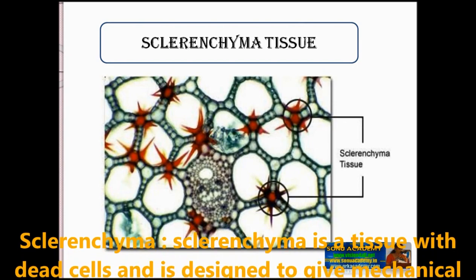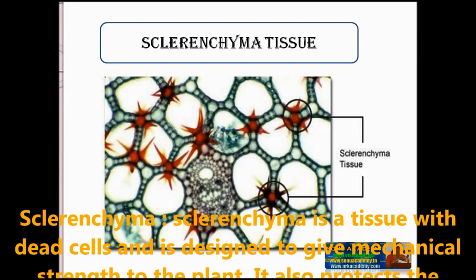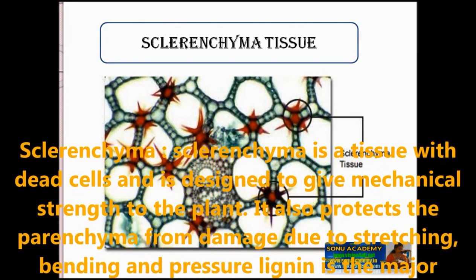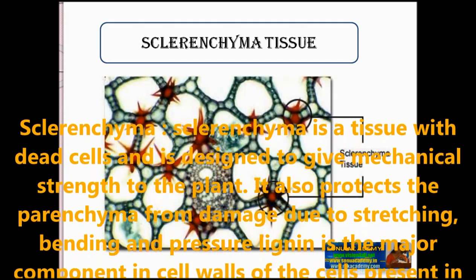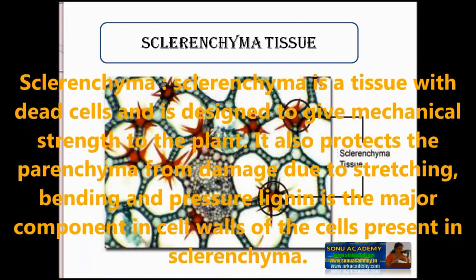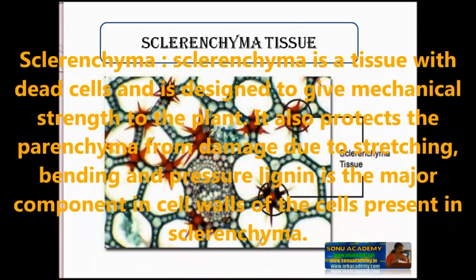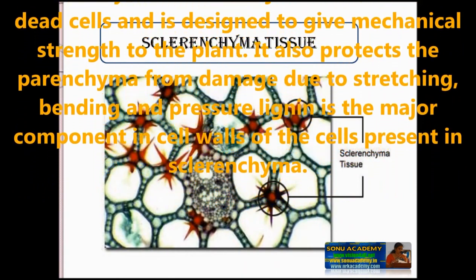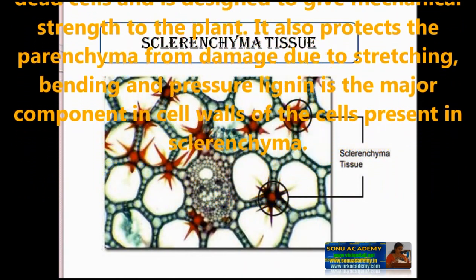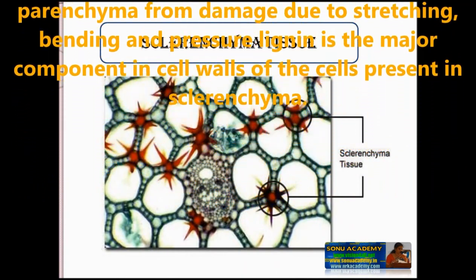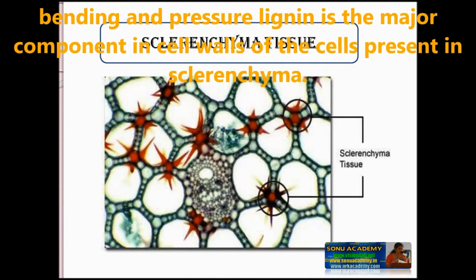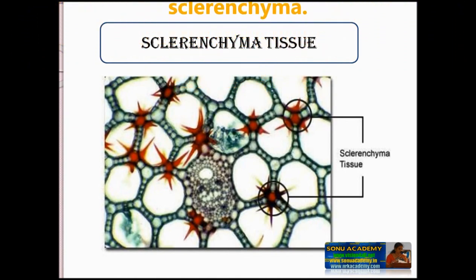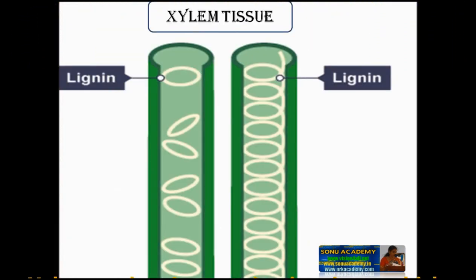Sclerenchyma is a tissue with dead cells and is designed to give mechanical strength to the plant. It also protects the parenchyma from damage due to stretching, bending and pressure. Lignin is the major component in the cell walls of cells present in sclerenchyma.